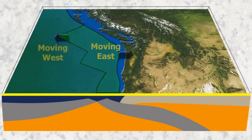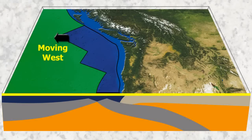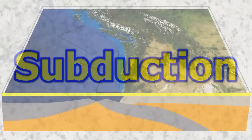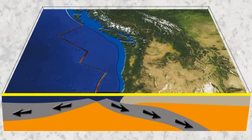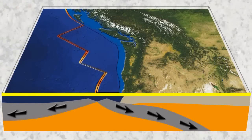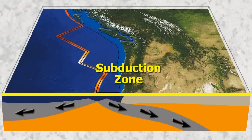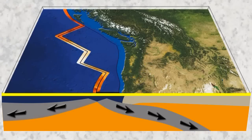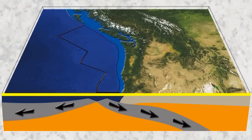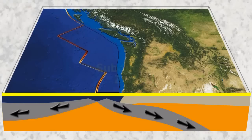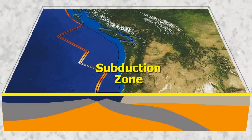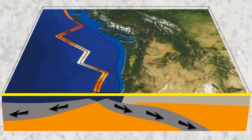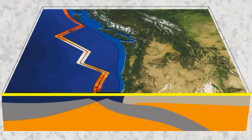The Juan de Fuca plate moves to the east and the Pacific plate moves to the west. Megathrust earthquakes can only occur in places where a plate is pushed under another plate. This process is called subduction. Earthquakes that occur because of this process are the only known earthquake type that can cause a 9.0 or greater earthquake, and it is because of this that most megathrust earthquakes cause large tsunamis.